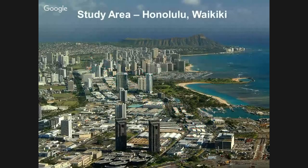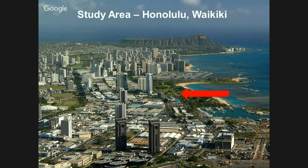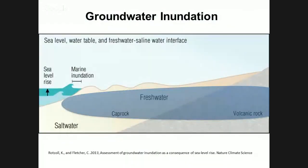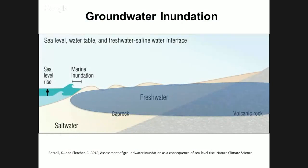It's generally agreed upon that by 2050 we should expect about a third of a meter of sea level rise, and by 2100, one meter of sea level rise. As sea level rises, we'll get flooding from water coming up and over the coastline, as well as water coming up through the surface. There's a big body of water down there that will be lifted as sea level rises, producing inland wetlands and narrowing the space between the surface and groundwater level — what we call accommodation space.